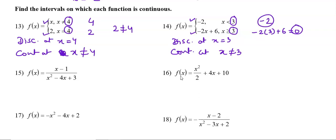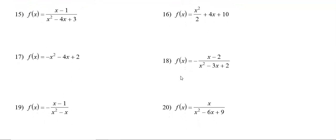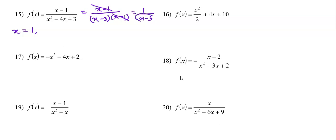Question number 15 is a rational function. We simplify: the numerator is (x-1) and the denominator factorizes as (x-3)(x-1). We cancel the common factor, getting 1/(x-3). There are two kinds of discontinuity: removable discontinuity at x = 1 (common factor), and infinite discontinuity at x = 3 (denominator becomes 0).